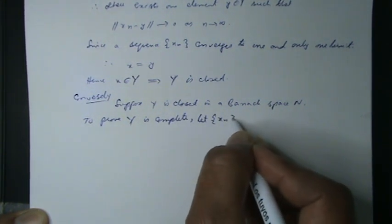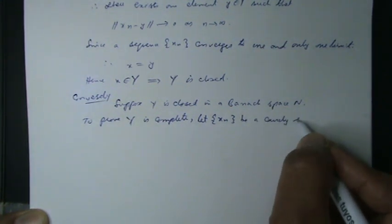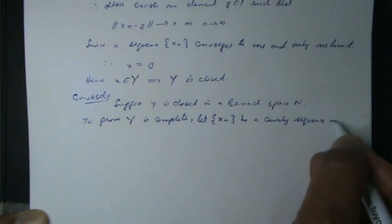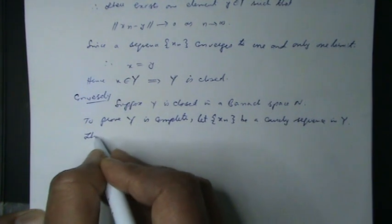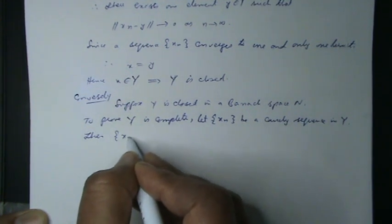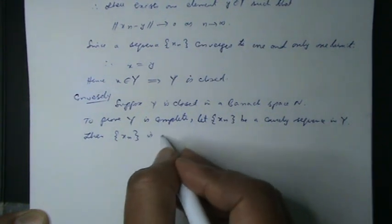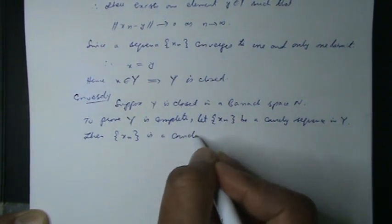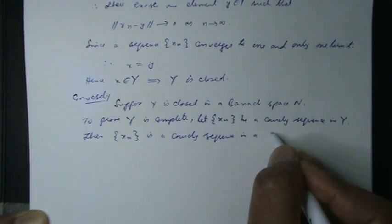Let x_n be a Cauchy sequence in Y. Then x_n is a Cauchy sequence in a Banach space N.